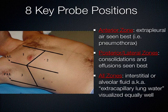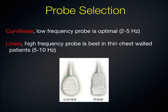Briefly, for probe selection: ideally we use the curvilinear probe, but it depends on your patient's body habitus. You can use the high-frequency linear probe, and you can also use the cardiac probe. A lot of it depends on whether you're looking for the forest or the trees. If you want the big picture, start with the low-frequency probe for a deeper view. When you're looking for detail — like when we look at pneumothorax — pick up the high-frequency probe for more detail.